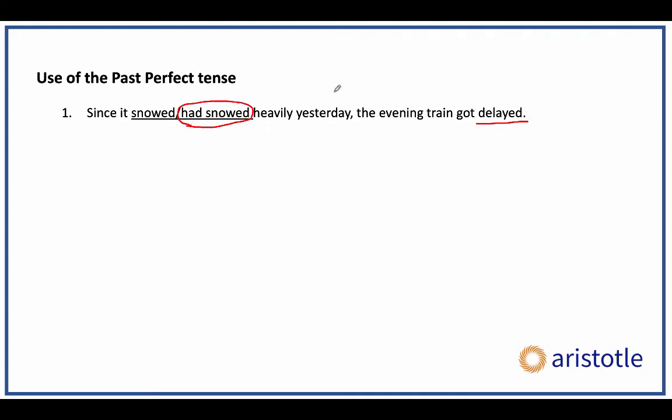Another way to confirm whether to use past perfect: look at the rest of the sentence, especially the non-underlined part — there should be a simple past tense somewhere. If there is no simple past anywhere else, you can't use past perfect. For example: 'Peter won the race because he practiced / had practiced hard for it.'